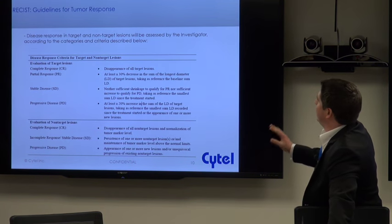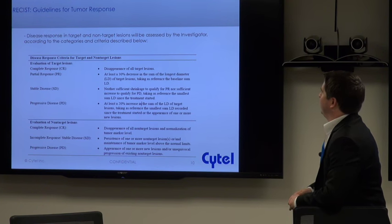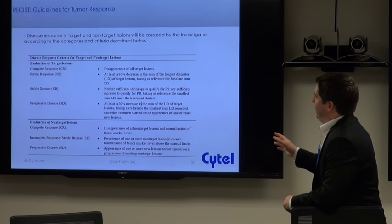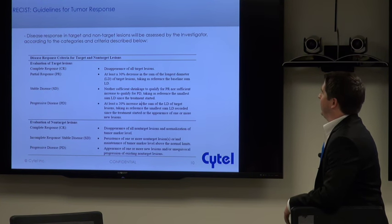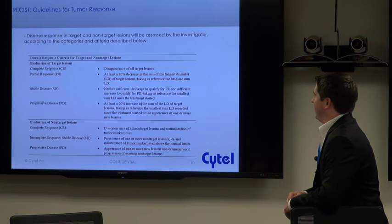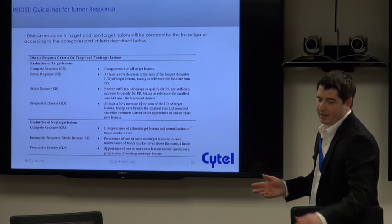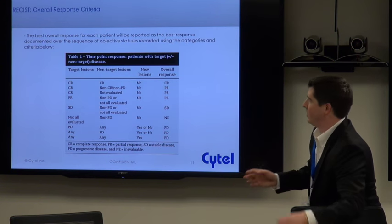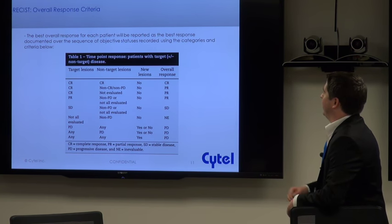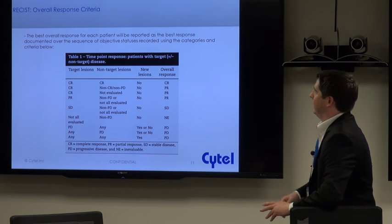This chart from RECIST determines your disease response. Complete response or partial response means the tumors are shrinking; stable disease means they've stayed relatively the same size; and progressive disease means the lesions have increased by 20%. For non-target, a complete response means the non-target lesions have disappeared; progressive disease means there's been identification of new lesions or unequivocal progression has occurred. Once you've analyzed the disease response for target and non-target, that determines your overall response, and you capture the best overall response across the follow-up tumor assessments.